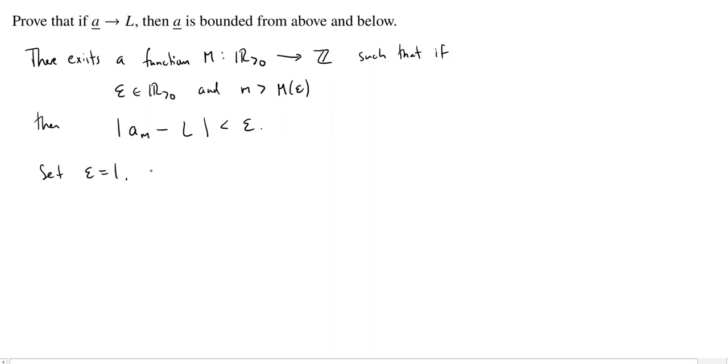So set epsilon equal to one. Then we know for all m greater than the eventually number for one. So if we go out far enough, and m of one tells us exactly what that means, if we go out far enough, then we have that the distance between a_m and L is less than one.